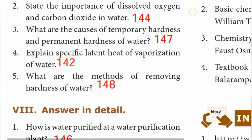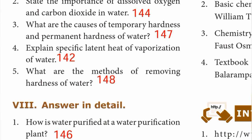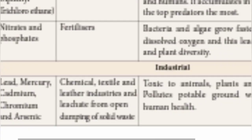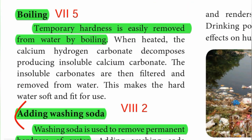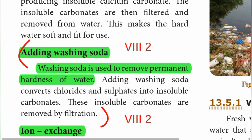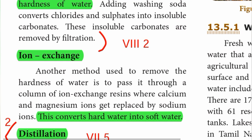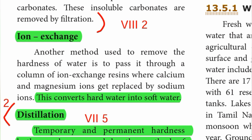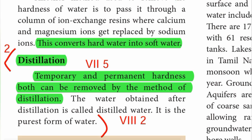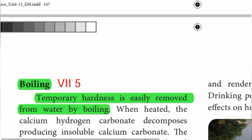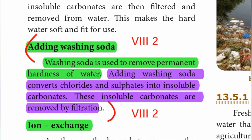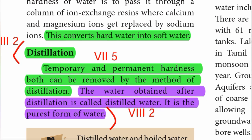Question number 5: What are the methods of removing hardness of water? Page number 148. First, boiling — temporary hardness is easily removed from water by boiling. Second, adding washing soda — washing soda is used to remove permanent hardness of water. Third, ion exchange — this converts hard water into soft water. Fourth, distillation — both temporary and permanent hardness can be removed by the method of distillation.